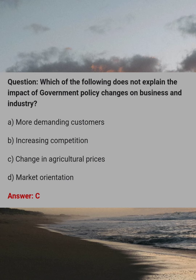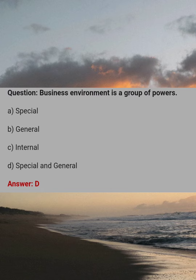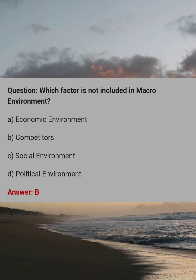Which of the following does not explain the impact of government policy change on business and industry? Answer: C, change in agriculture prices. Business environment is a group of powers. Answer: D, special and general. Which factor is not included in macro environment? Answer: B, competitors.